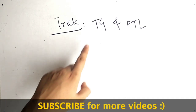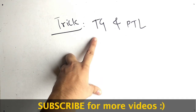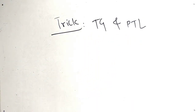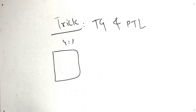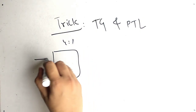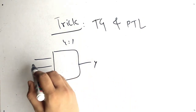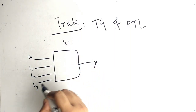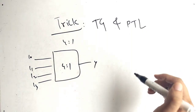Today our topic is how to solve the equation using TG and PTL logic, and we will use a trick here. Suppose we have the question of a 4-to-1 MUX — a very popular question. A 4-to-1 MUX has 4 inputs and gives one output. Let's say the inputs are I0, I1, I2, and I3.